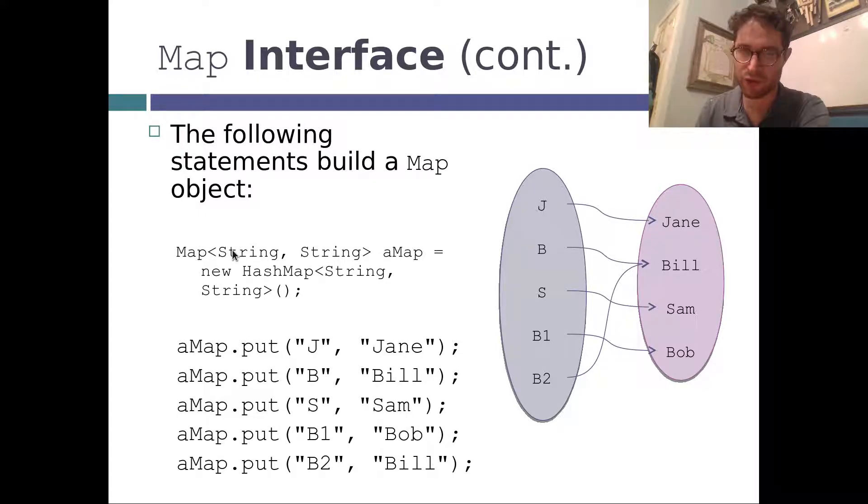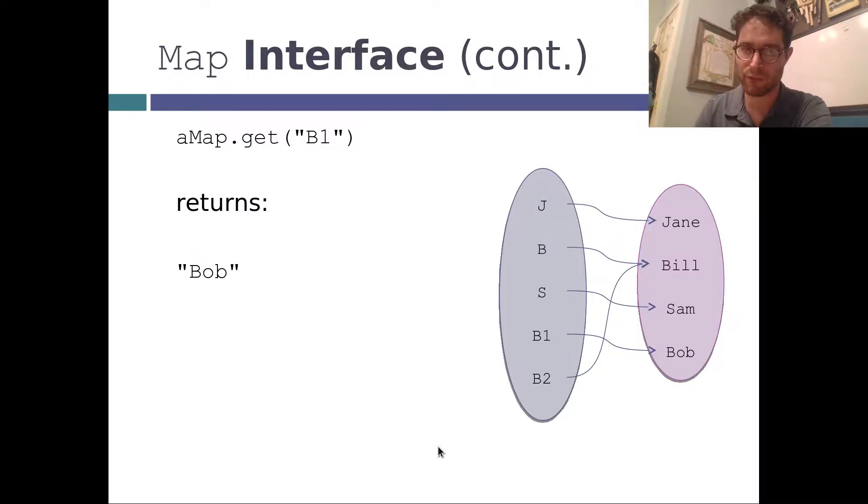So this is mapping one string to another string. We're putting J and Jane, B and Bill, S and Sam, B1 and Bob, B2 and Bill. And again, you can have the same value, so two things can have the same value, but you can't insert a key more than once.